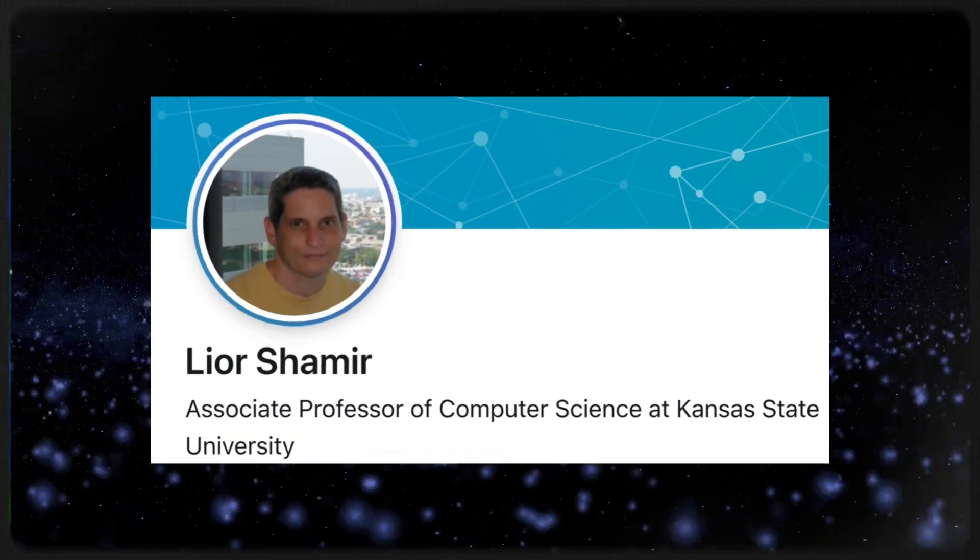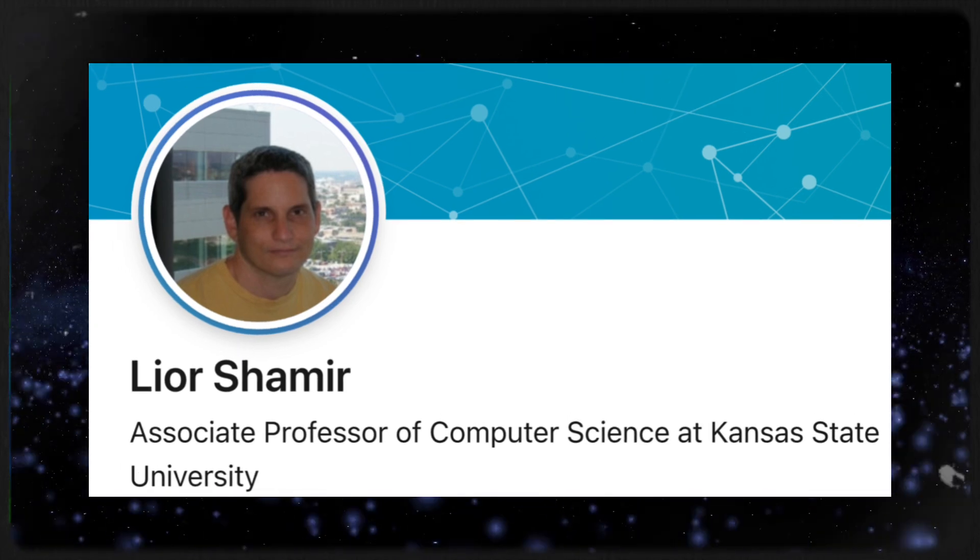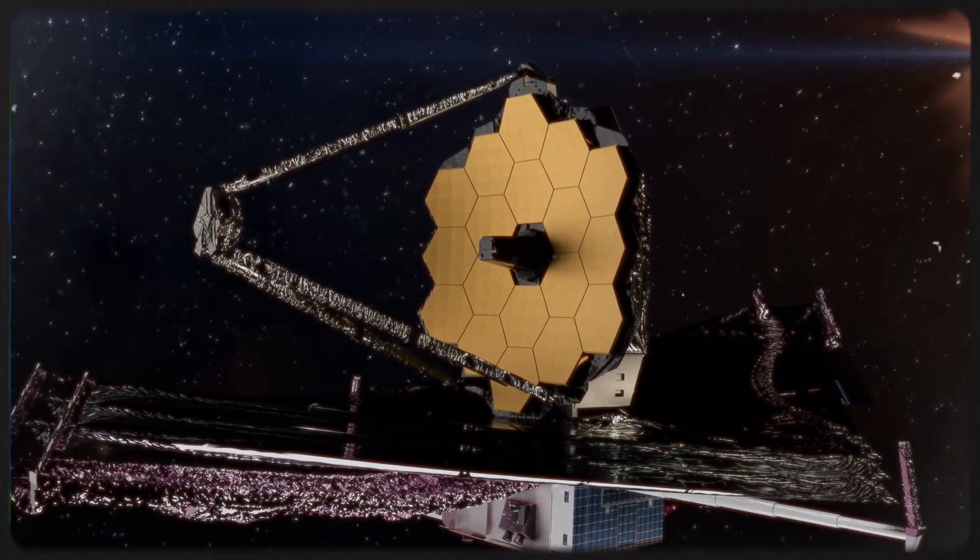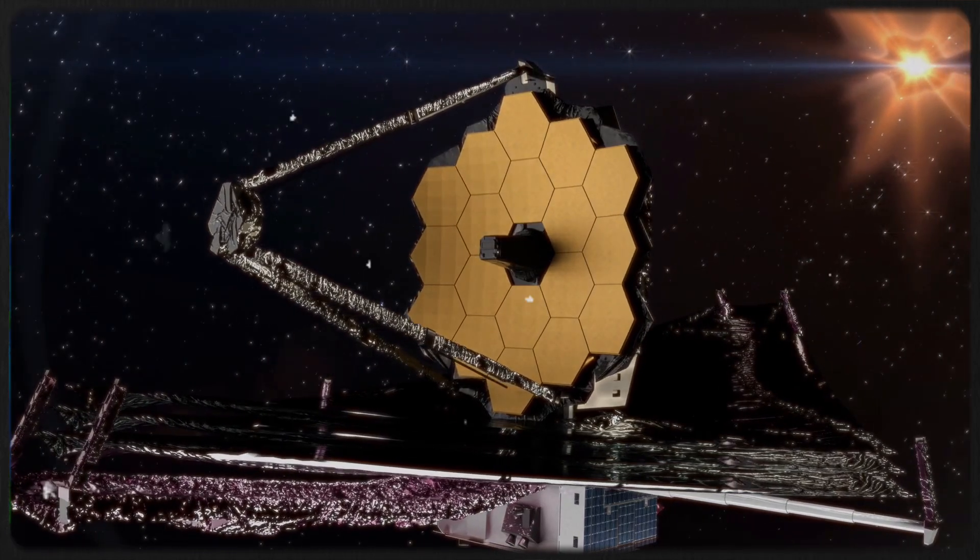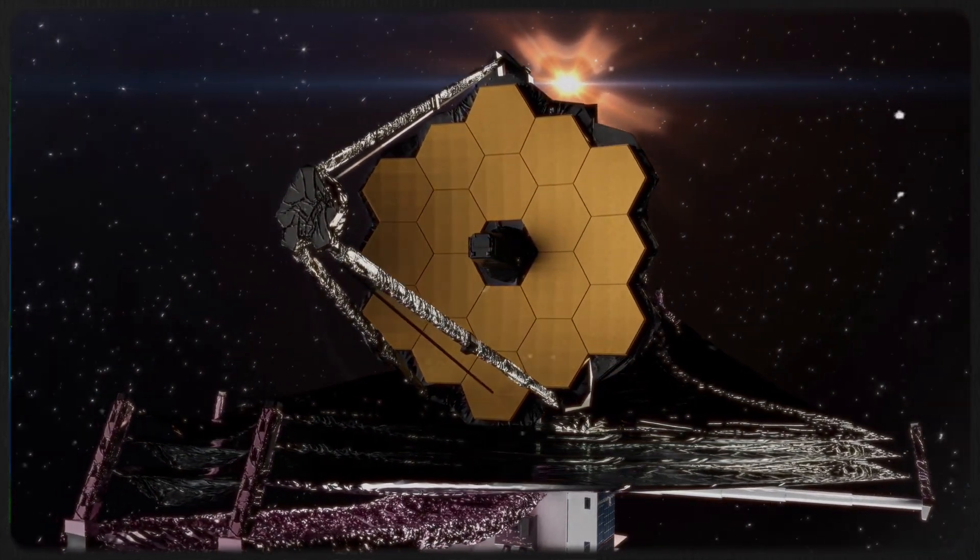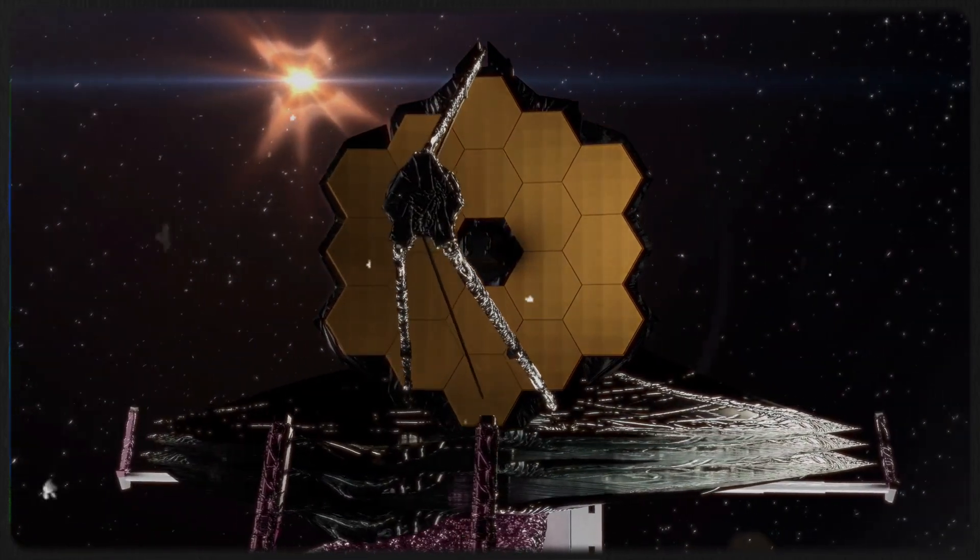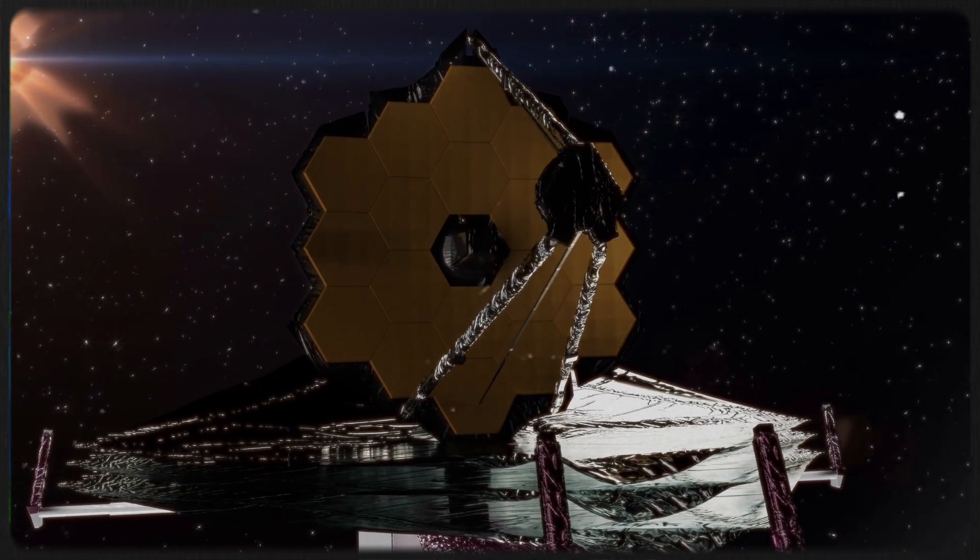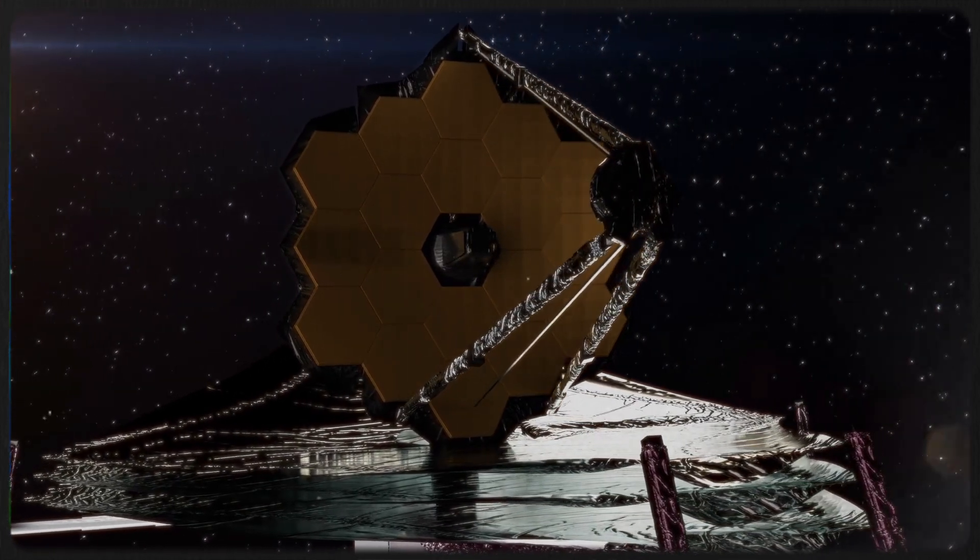One of those voices belongs to Professor Lior Shamir from Kansas State University. He's sounding the alarm, pointing out that the Webb Telescope's deep space images don't match what the Big Bang theory predicts. But he's not stopping there. Here's the bombshell. Professor Shamir now claims that the James Webb data shows something even more bizarre: the entire universe might be spinning.